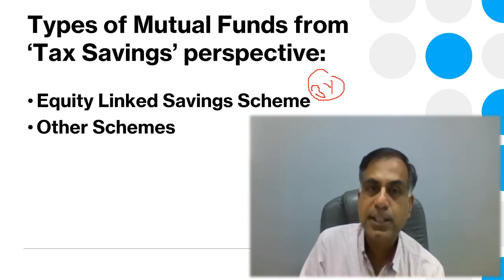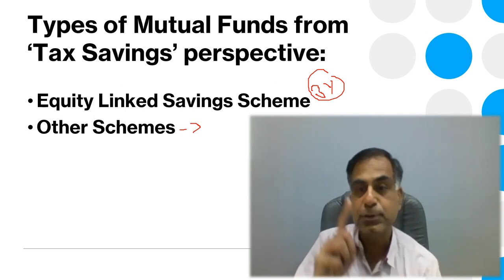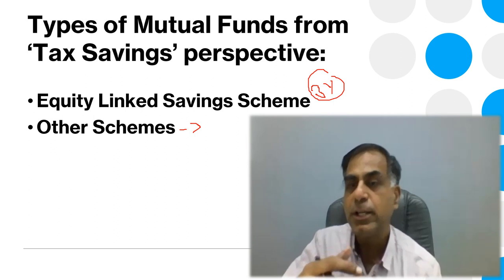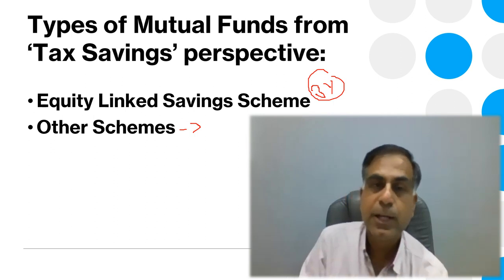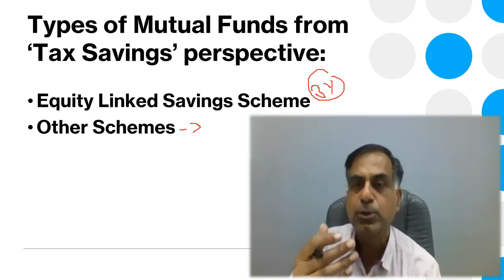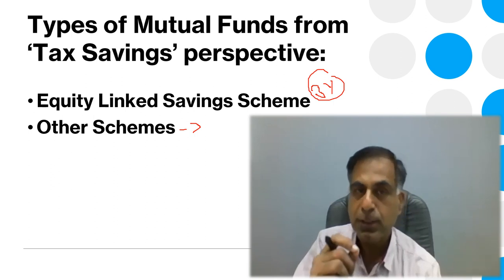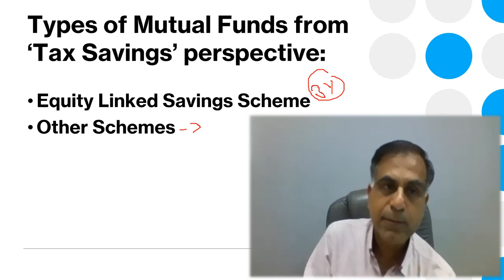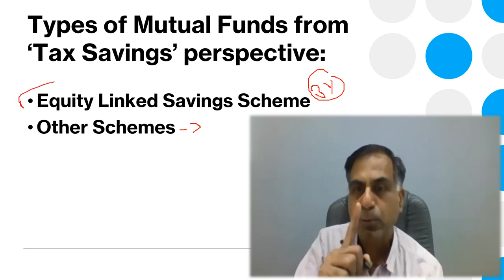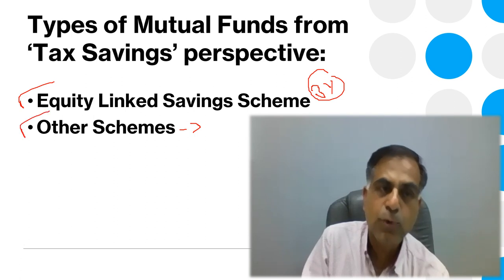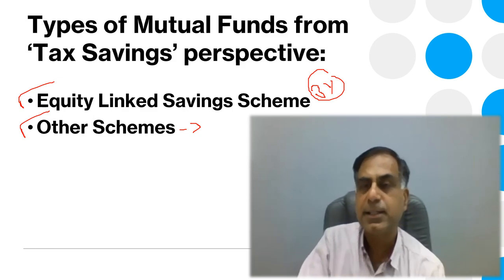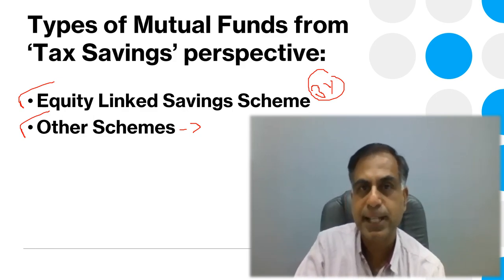When you go into other schemes, there is no lock-in period — that is the main substantial difference. Equity Linked Saving Schemes are usually more towards equity-oriented mutual funds, whereas other schemes may be a liquid fund, a hybrid fund, a balanced fund, or similar. As an investor, you must understand that when you want to save tax as well as invest in a mutual fund, Equity Linked Saving Scheme is the only option available to you. When you want to grow capital as well as avail other benefits like dividends, then other schemes of mutual funds may also be used.